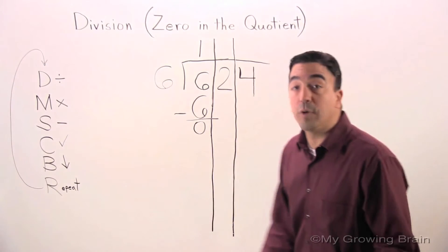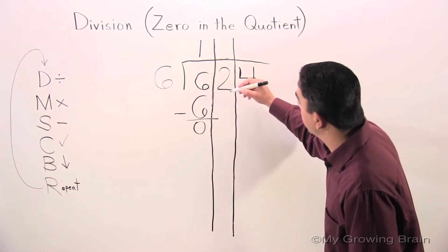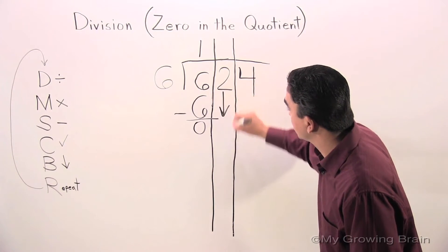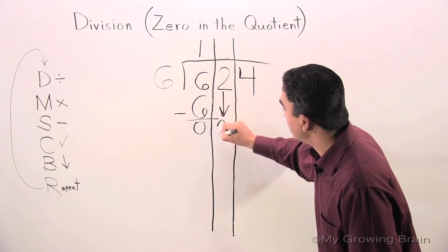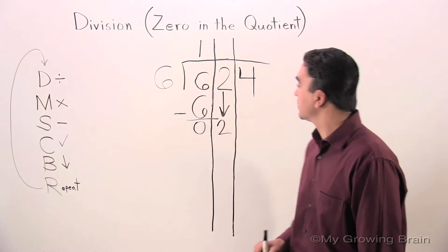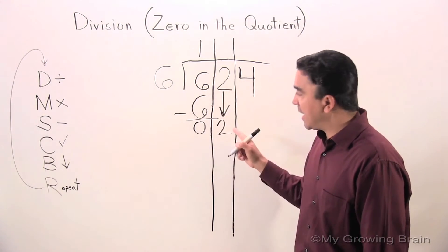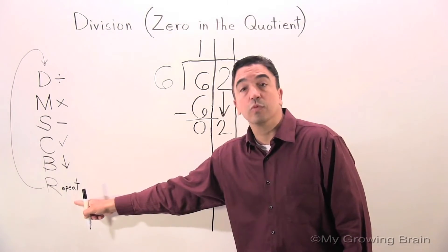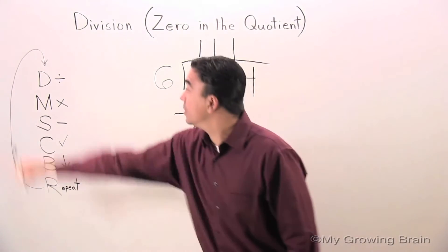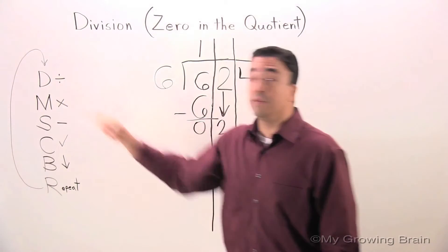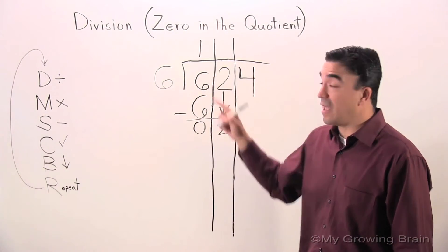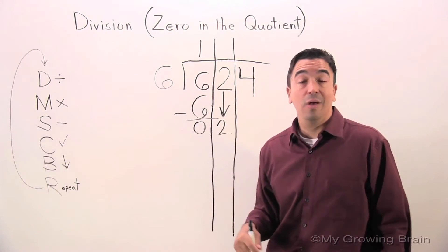B — bring down. So we bring down the two. Repeat. Divide — six into two, or two divided by six.